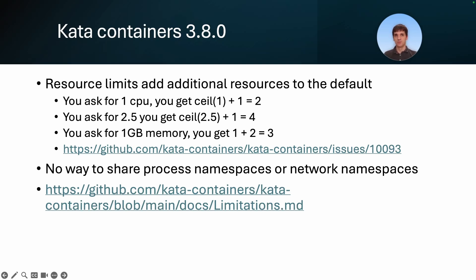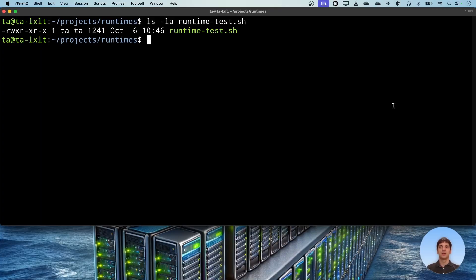Another interesting fact about Kata Containers is that you cannot share process namespaces or network namespaces between Docker containers. You can read about other limitations too — I will share the link in the description.